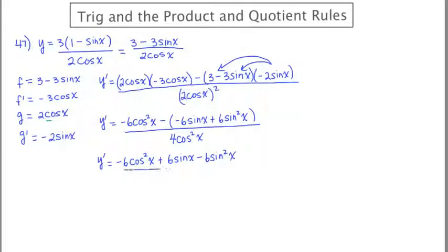This is all over 4 cosine squared x. The temptation in a problem like this, because it's so long and seems endless, is to start taking shortcuts — you just want to race through it and be done. But that's probably exactly where careless errors are going to occur. So just take it slow, one step at a time. You're going to be done before you know it.